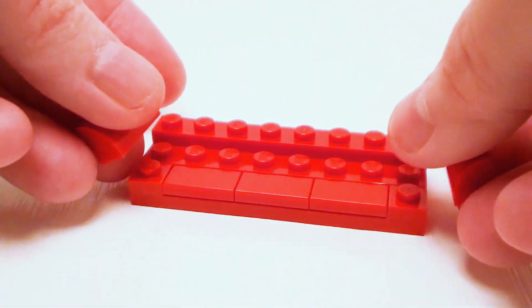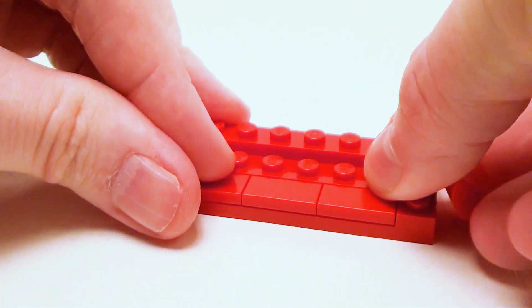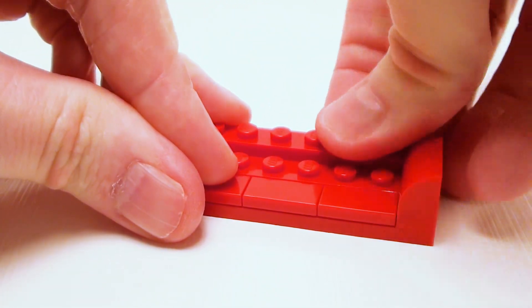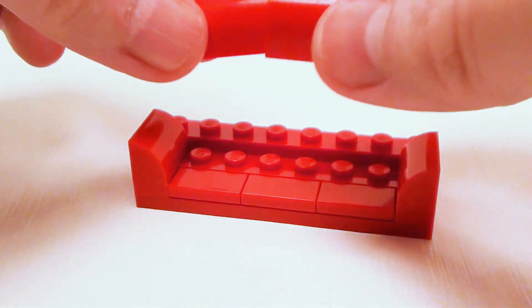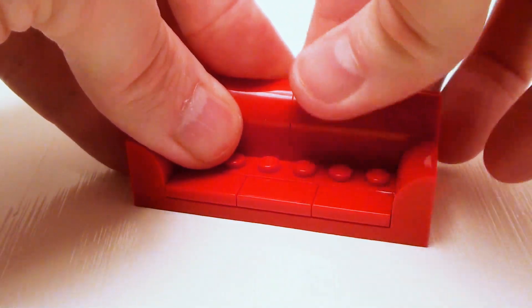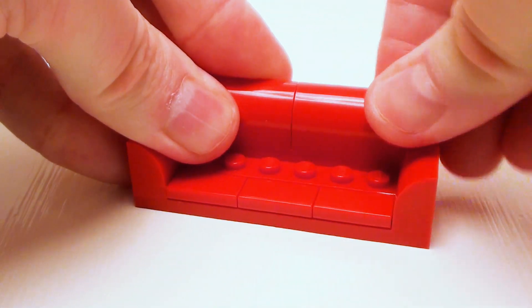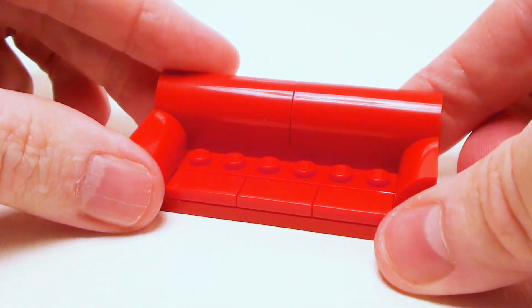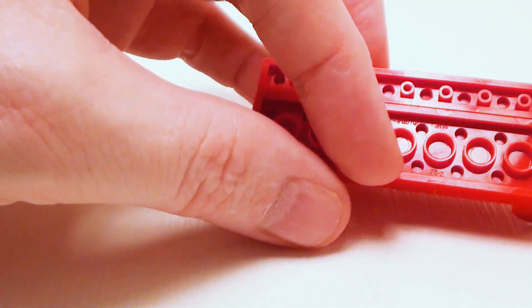For arms let's take two more 1 by 2 bricks with half bow, and for the back a pair of 1 by 4 by 1 and 1 thirds brick with half bow. Now let's flip the comfy sofa over.